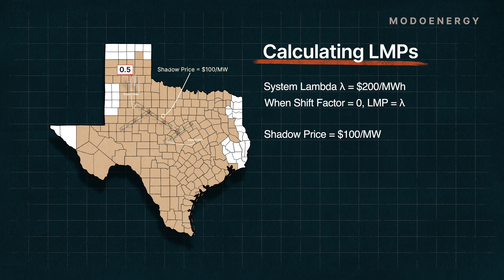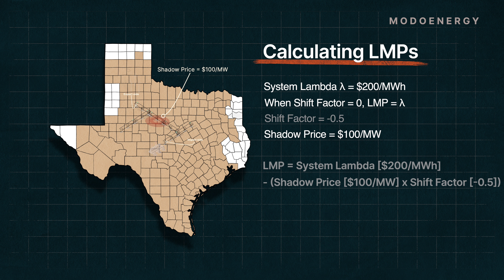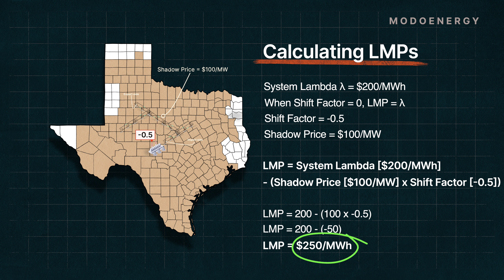Meanwhile, let's think about our other generator that is nearer to the import side of the congestion, with its shift factor of negative 0.5. When we run through this same calculation, we find that its price is actually higher than the system lambda, with a final value of $250 per MWh.